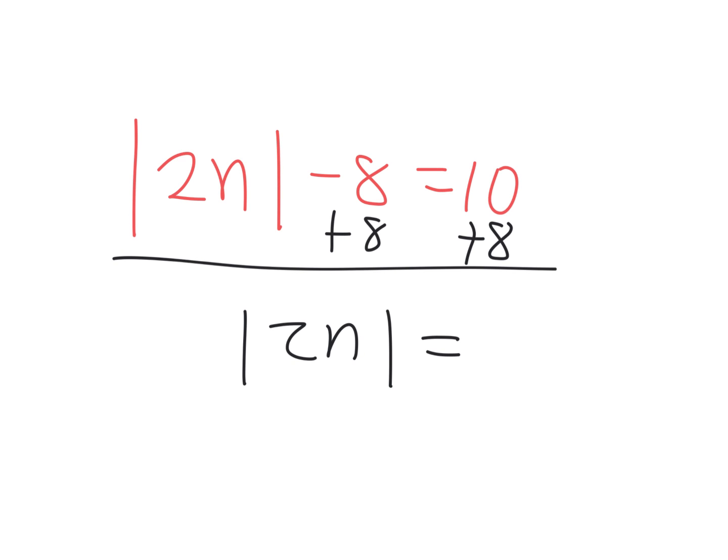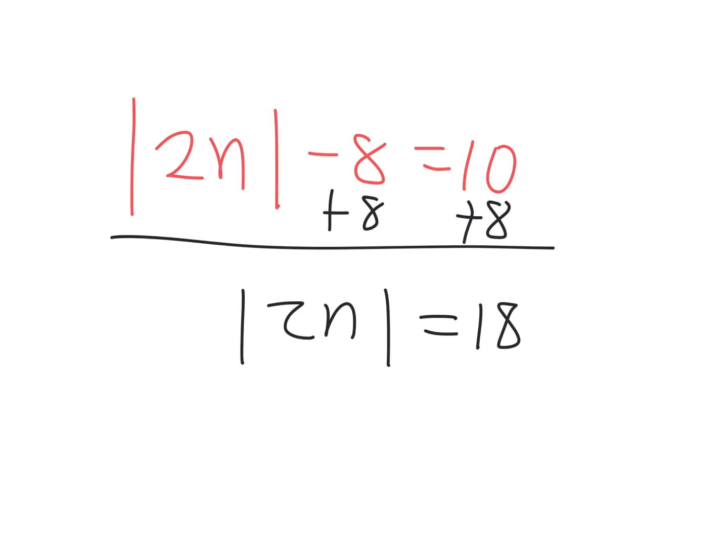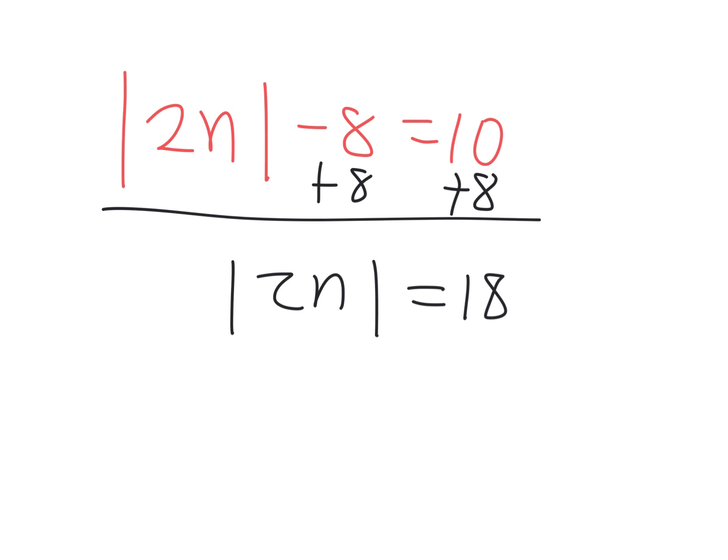What if I'm just going to make a very subtle little change to this. Absolute value of 2n minus 8 equals 10. I changed a couple little things. Absolute value of 2n minus 8 equals 10. This is just the same. One kid last hour thought you split it into two equations right away. You do not. You start by adding 8.